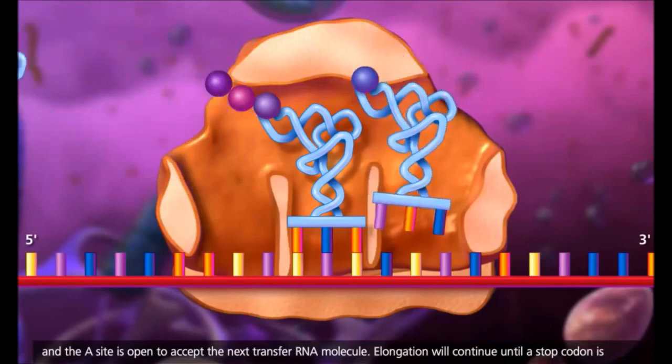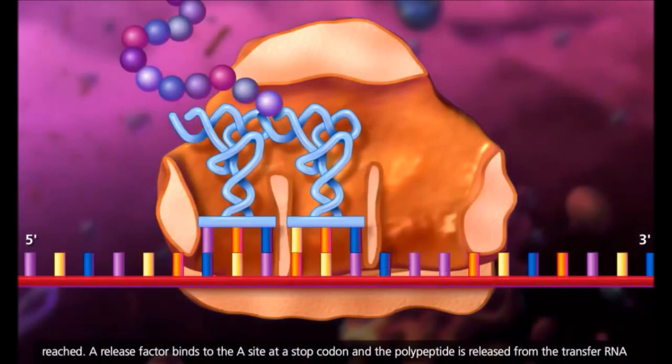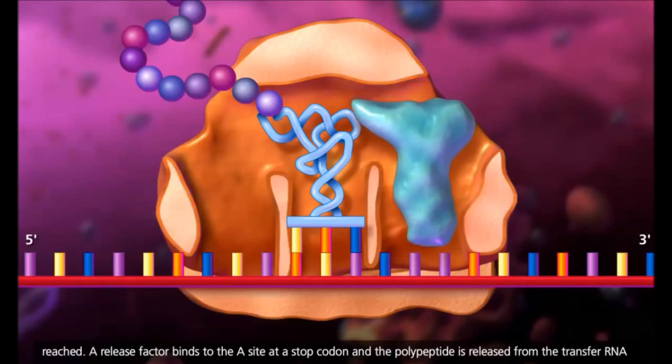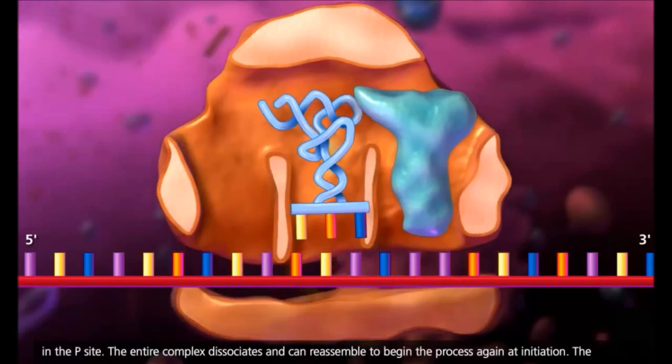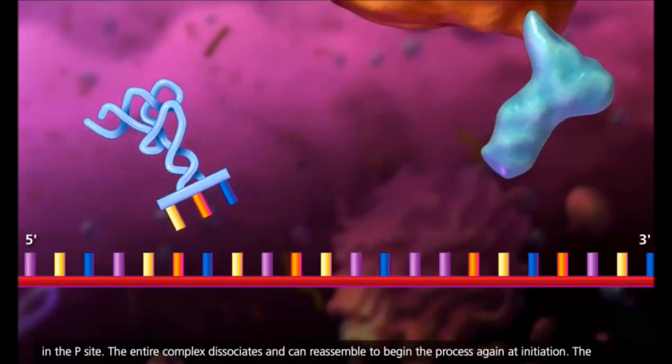Elongation will continue until a stop codon is reached. A release factor binds to the A site at a stop codon and the polypeptide is released from the transfer RNA in the P site. The entire complex dissociates and can reassemble to begin the process again at initiation.